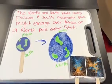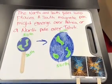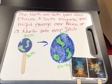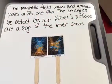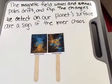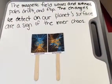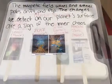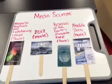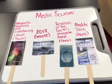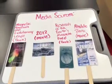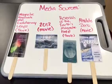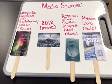The north and south poles swap places. A south magnetic pole might emerge over Africa, or a north pole over Tahiti. The magnetic field waxes and wanes, poles shift, and flip. The changes we detect on our planet's surface are a sign of the inner chaos. Our media sources are 2012 and Absolute Zero, which are both movies, and Magnetic Reversals and Evolutionary Leaps and Reversals of the Earth's Magnetic Field, which are both books.